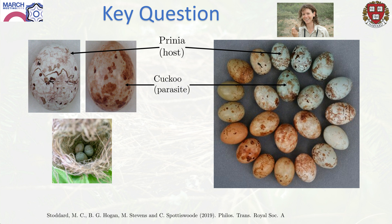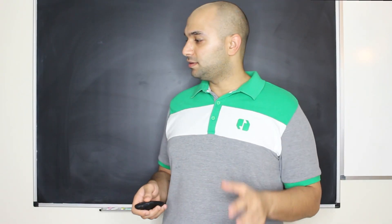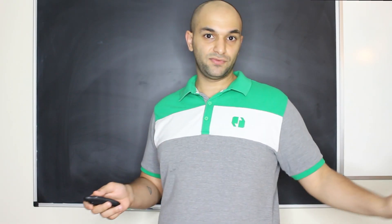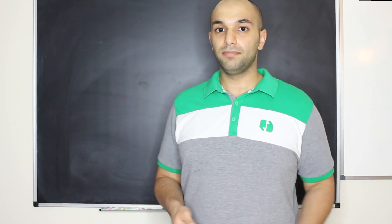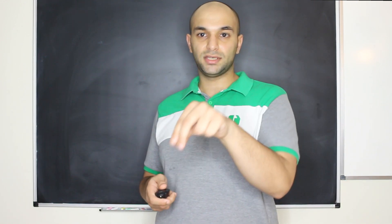We're interested in the system with cuckoos and prinias. The host eggs have developed a very wide diversity of colors, shapes, and patterns, and the cuckoos have matched this diversity by mimicking these eggs. Except for two features that seem not to be replicated — one is a particular color that parasites can't replicate, and there's actually been an increase over 40 years in the numbers of that color because those eggs are not parasitized.